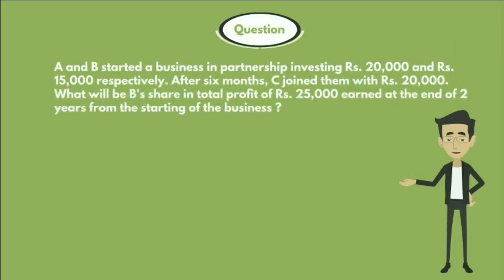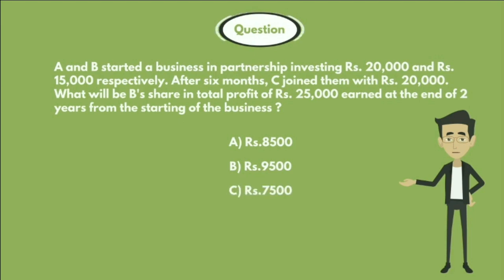A and B started a business in partnership investing 20,000 rupees and 15,000 rupees respectively. After six months, C joined them with 20,000 rupees. What will be B's share in the total profit of 25,000 rupees earned at the end of two years from the starting of the business? Options: A) 8,500 rupees, B) 9,500 rupees, C) 7,500 rupees, D) 6,500 rupees.